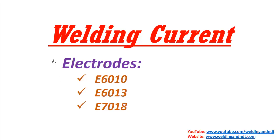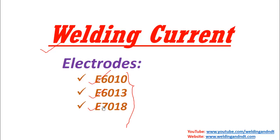Hello friends, welcome to my channel. In this video we'll learn about the welding current and the typical welding current ranges used during welding. For each electrode there is a different welding current range. We'll learn about the current range for three popular electrodes: E6010, E6013, and E7018.